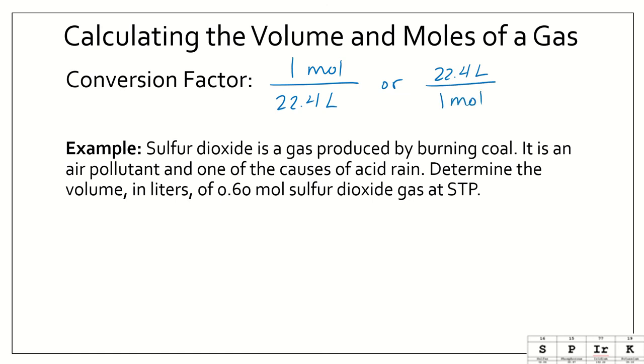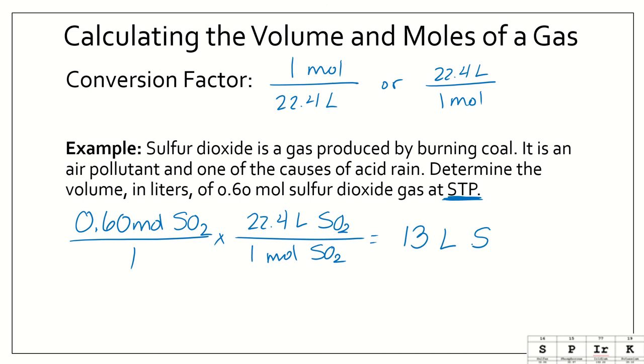For example, sulfur dioxide is a gas produced by burning coal. It is an air pollutant and one of the causes of acid rain. Determine the volume in liters of 0.60 mole of sulfur dioxide gas at STP. We already know that we have 0.60 mole of sulfur dioxide, also known as SO2. We're going to convert that to liters. Since this is at STP, we are good to use our conversion factor. For every 1 mole of SO2, I'm going to have 22.4 liters of SO2. When I multiply that through, I get an answer of 13 liters of SO2.